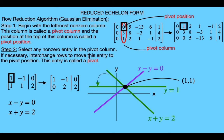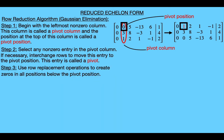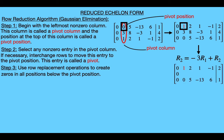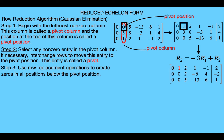Step three says to use row replacement operations to create zeros in all positions below the pivot position. In our example we want zeros in the two positions below the pivot one. We replace the second row with the sum of itself and negative three times the first row. The first entry stays zero, the next entry is negative three times one plus three which equals zero, then negative three times two plus eight equals two, then we get negative six, then four, and the last entry is negative three times two plus four which equals negative two.